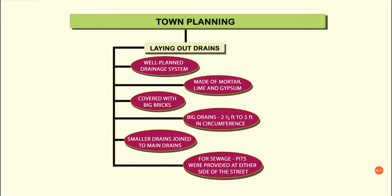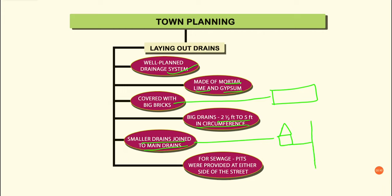Laying out drains. Another striking feature of town planning was the drainage system. The drains are made of mortar, lime, and gypsum. They are covered with big bricks which could be lifted easily when the drains needed to be cleaned. The big drains are two and a half to five feet in circumference. Smaller drains from houses are connected to the main drains running through the streets. Pits are provided on either side of the street for sewage and dumping of waste. All this shows that the Indus people took great care in keeping their cities neat and clean, and had knowledge about sanitation.